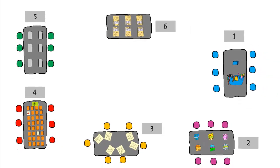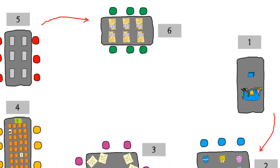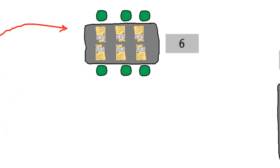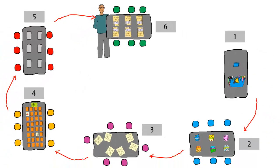Notice that I made the empty station last and the video viewing station second to last. Get students started at their first station, and after a set amount of time, have them rotate to the next station. Once students start rotating to station six, this is where you'll spend most of your time, to make sure the concepts from the video are being applied correctly.